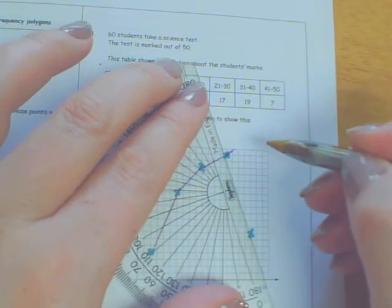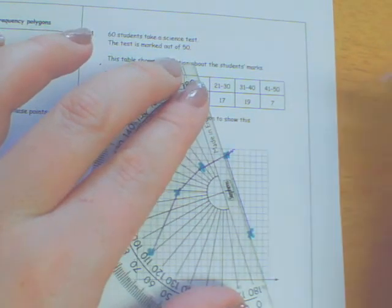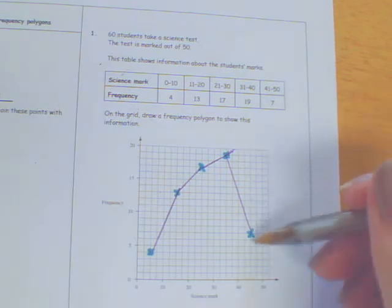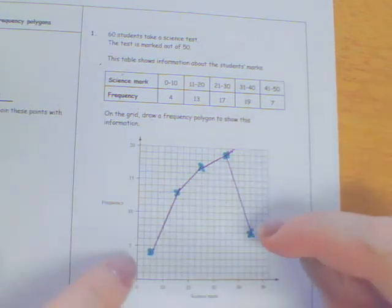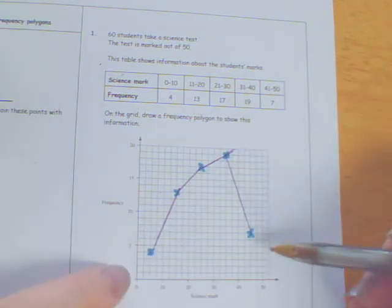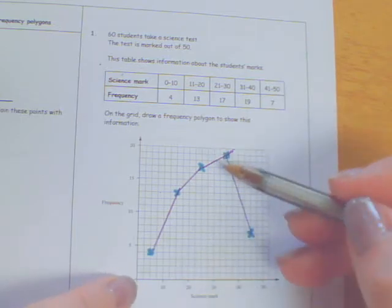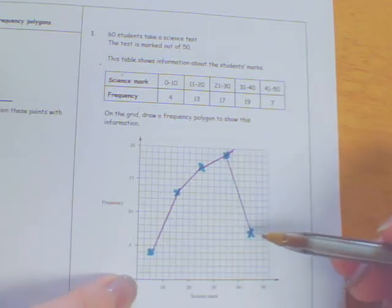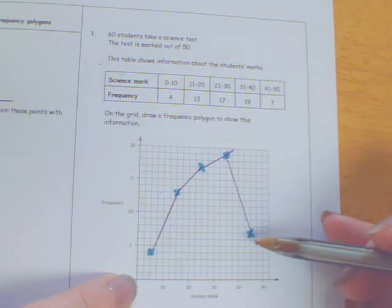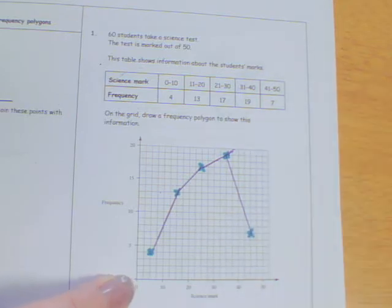What we do not do is join these together. So these two dots do not get joined together, and we do not join this to the axes. It sits like that. So do not, whatever you do, join it to the axes. Have a look at another one.